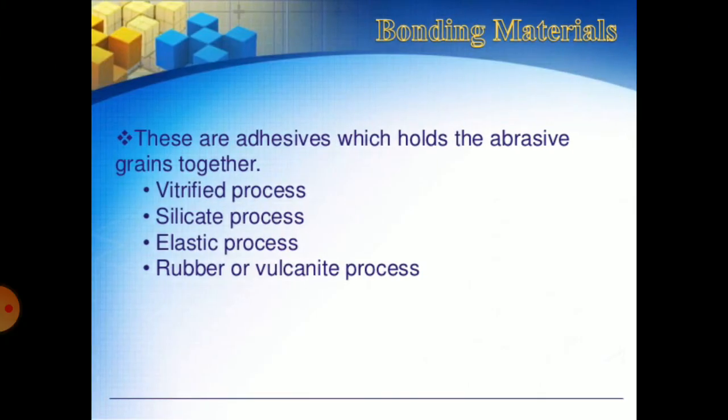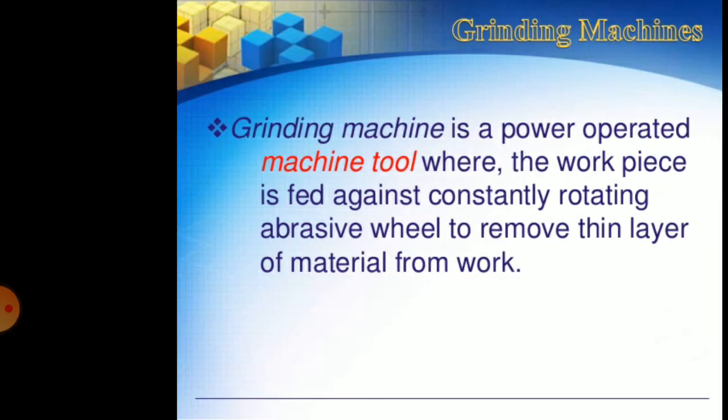Now, bonding materials. These are adhesives which hold the abrasive grains together. The bonding processes include the vitrified process, leakage process, elastic process, and rubber or vulcanite process.